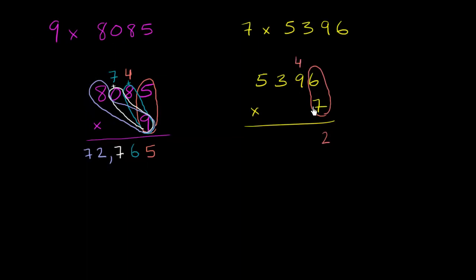Then we need to concern ourselves with 7 times 9. We calculate that and then add the 4. 7 times 9 is 63, plus 4 is 67. So we put the 7 down here and carry the 6.